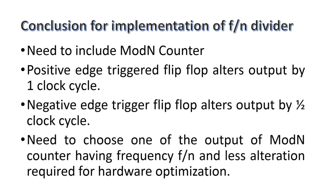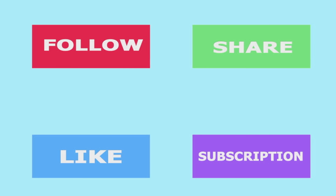Let me once again conclude all the points. To design a frequency divider of frequency f/n: first, include a mod-n counter. A positive-edge triggered flip-flop with an OR gate alters the output by one clock cycle. We must choose the output of the mod-n counter having frequency f/n where the least alteration is required, for hardware optimization. Friends, with this I am ending this episode. If you liked the video, please press the like button, share it with your friends, and subscribe to our channel for notifications of similar videos. Thank you so much.